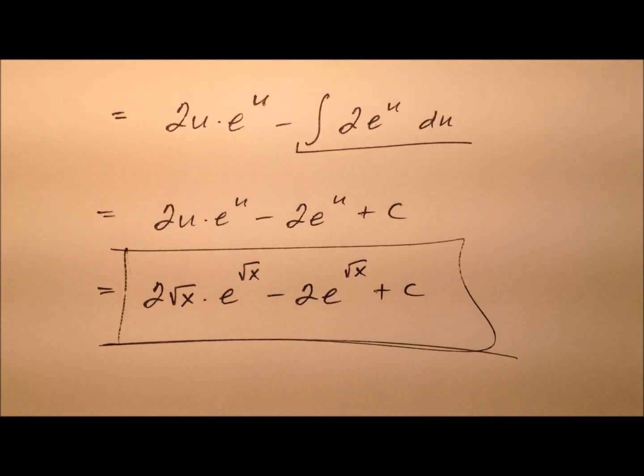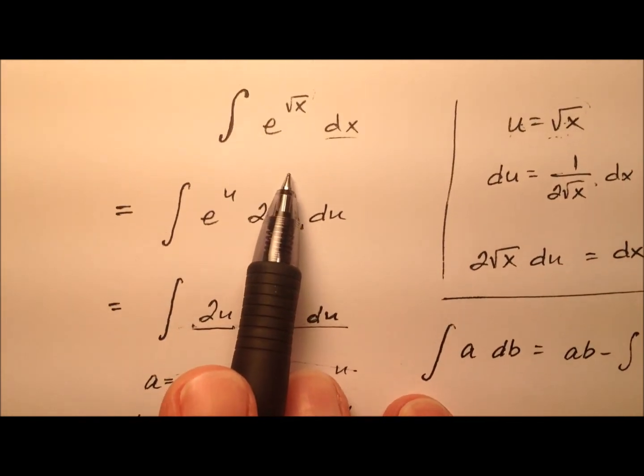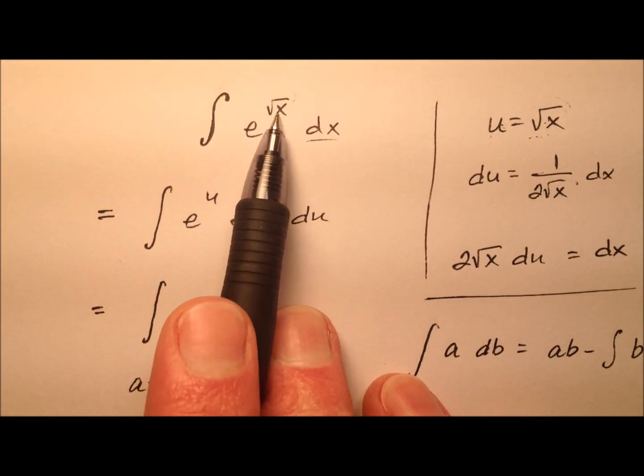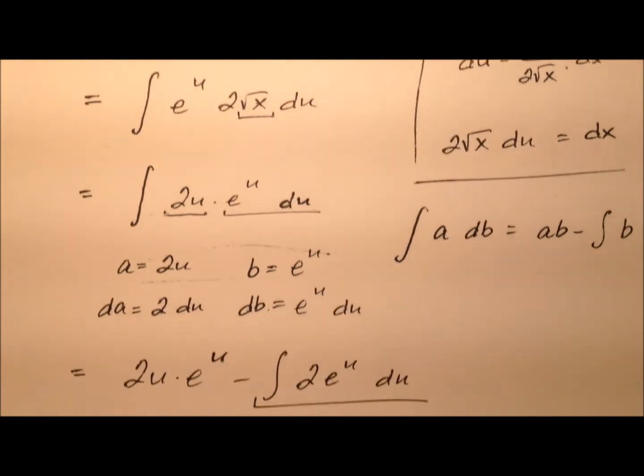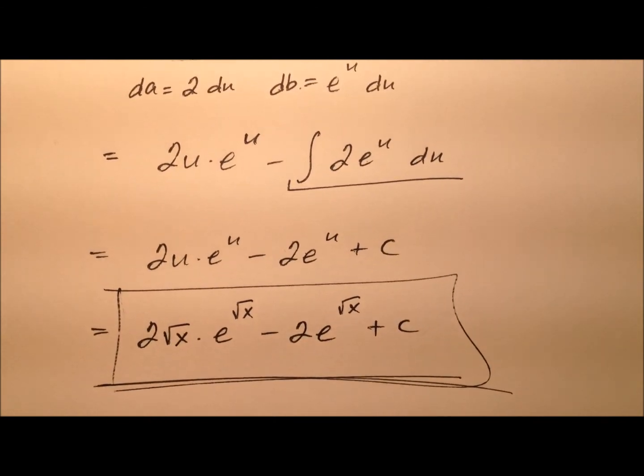And it looks like using both a change of variables with a u substitution and integration by parts, we have now integrated this e to the square root of x. And here's what we have.